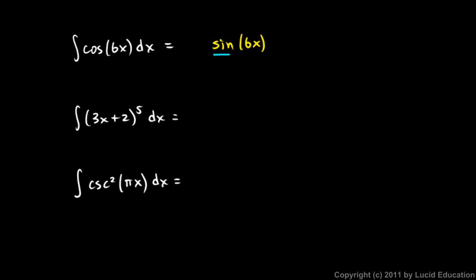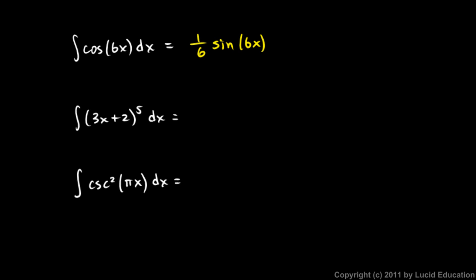So when we differentiate this, we don't get cosine 6x — we get 6 times that. So we're off by a factor of 6, so we need to introduce a 1/6. The answer will be (1/6)sin(6x) + c.